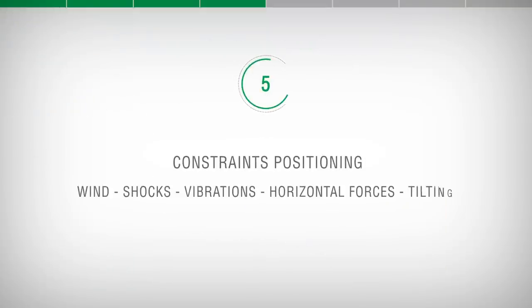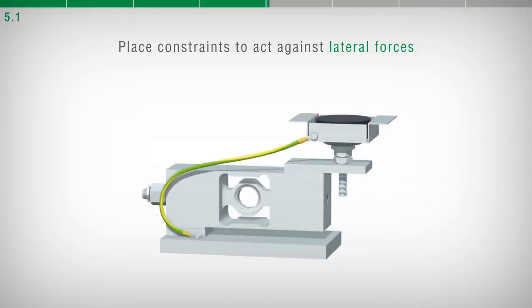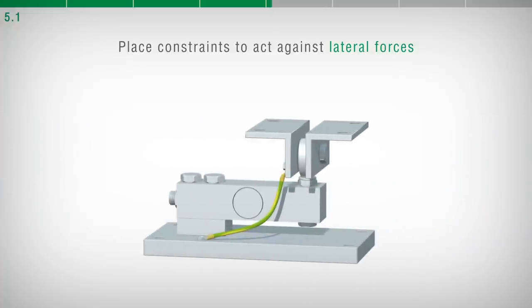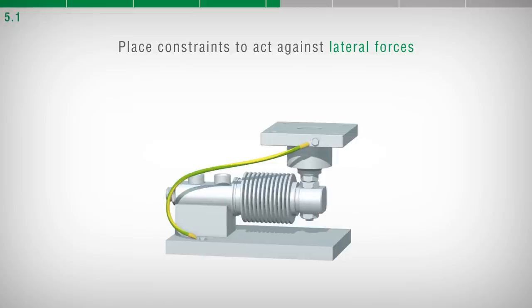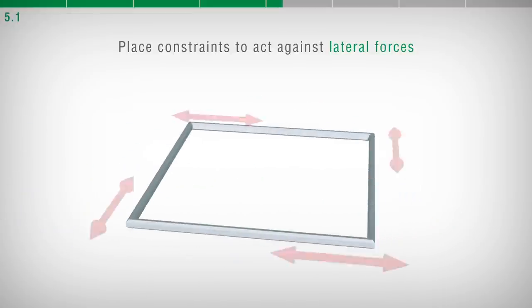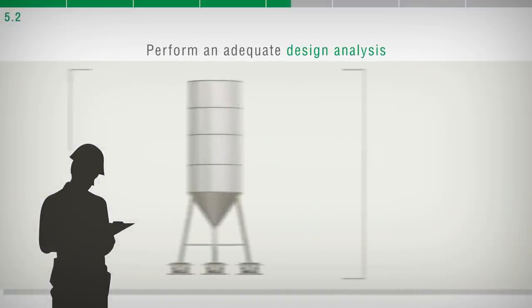Constraints positioning: Wind, Shocks, Vibrations, Horizontal forces, Tilting. Several mounting kits are available. Their purpose is to obtain a correct installation of the load cell and the maximum reliability and precision, compatible with the mechanical, electrical and pneumatic connections on the structure to be weighed. In weighing systems with multiple load cells, it is recommended to place constraints to act against any lateral forces.